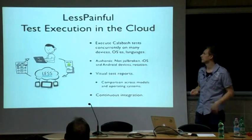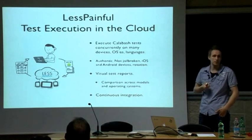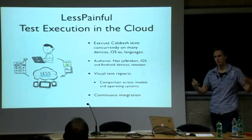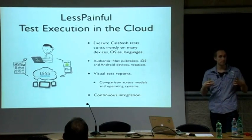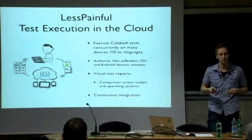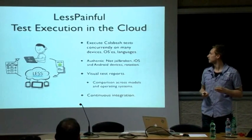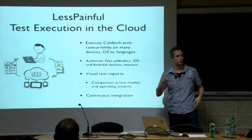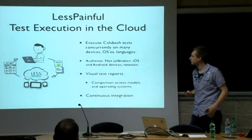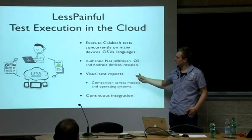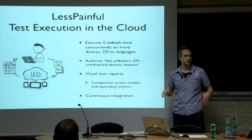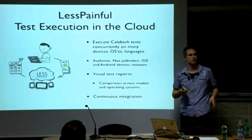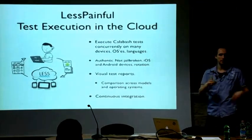The Less Painful service executes tests on a lot of phones at the same time — we have machines with about 50 phones connected, and you can send your tests to run simultaneously on all these different phones to make sure they work across various models. It's important that these phones are not jailbroken — they're real phones like you'd buy in a shop. You get visual test reports where you can actually see your app graphically on different models, which is especially useful for Android, where you might find screen rendering issues across devices.